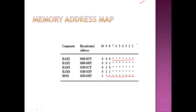The hexadecimal address determines which RAM chip we have to select. If it is 0 and 0, we will be selecting RAM 1; if it is 0 and 1, RAM 2, and so on. The 10th bit represents whether a RAM chip or a ROM chip is selected: if it is 0, the RAM chip is selected; if it is 1, the ROM chip is selected.